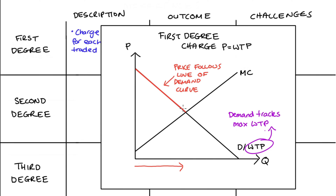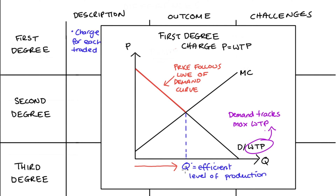This is a great deal for the firm because they charge the absolute maximum for each unit, producing right up to where the marginal cost curve equals demand. The quantity at that intersection I'll call Q* — that's actually the maximum we can trade in this market. The firm couldn't trade anymore since for quantities after Q*, the marginal cost of production is higher than the highest willingness to pay, so there's no price that will enable a trade. It follows that Q* is efficient: it exhausts all possible trades without overproducing where marginal cost exceeds willingness to pay.